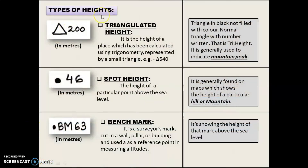Types of Heights: There are four kinds of heights you can see on the topographic map — triangulated height, spot height, benchmark, and relative height.